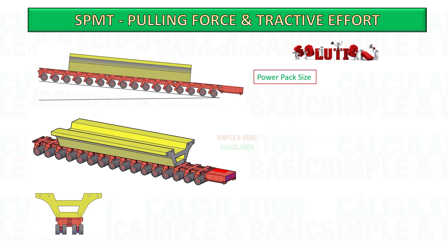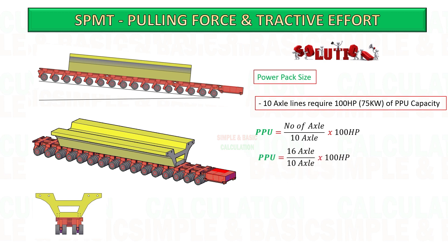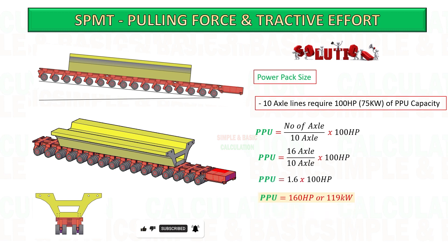Next, calculate the required horsepower of the power pack unit. 10 axle lines require 100 horsepower (75 kilowatts) of self-propelled modular transporter. To get the required horsepower, divide the total number of axle lines by 10 and multiply by 100 horsepower.